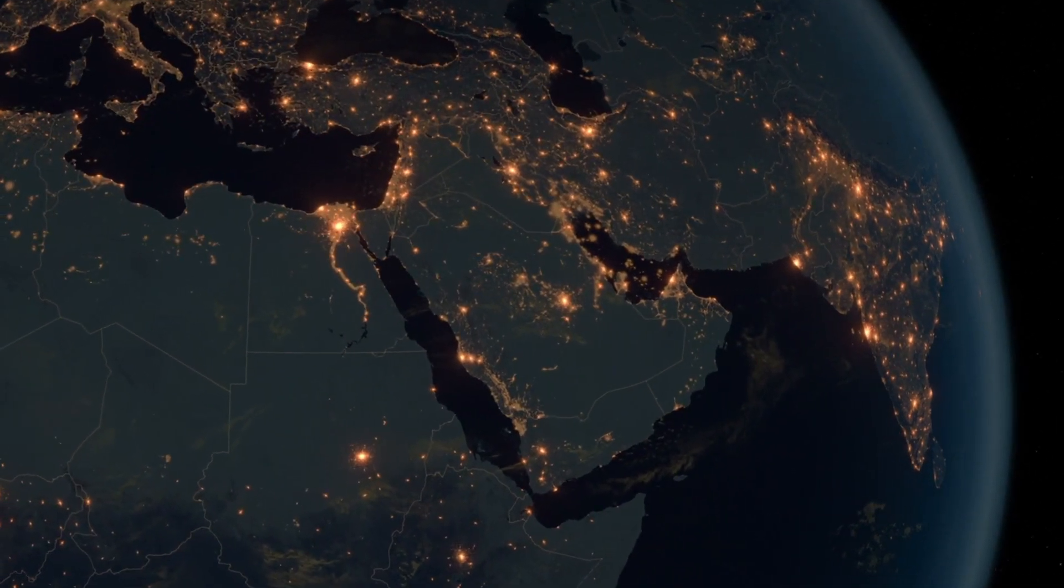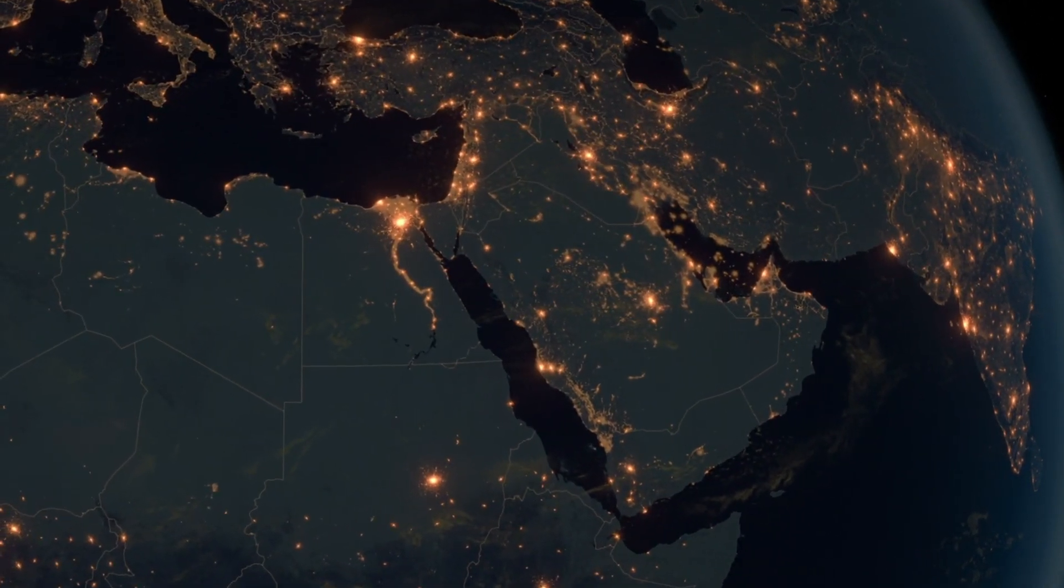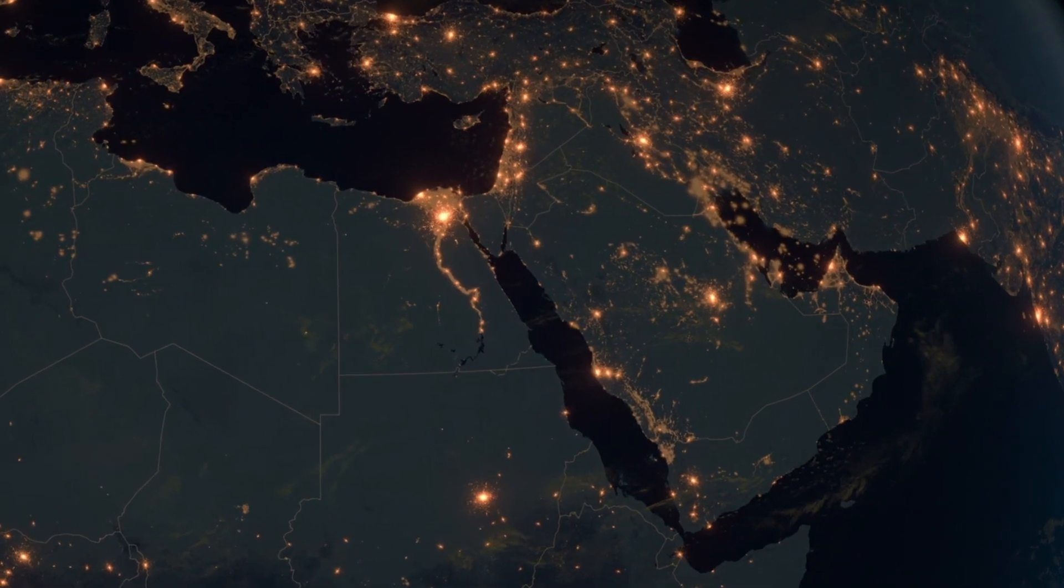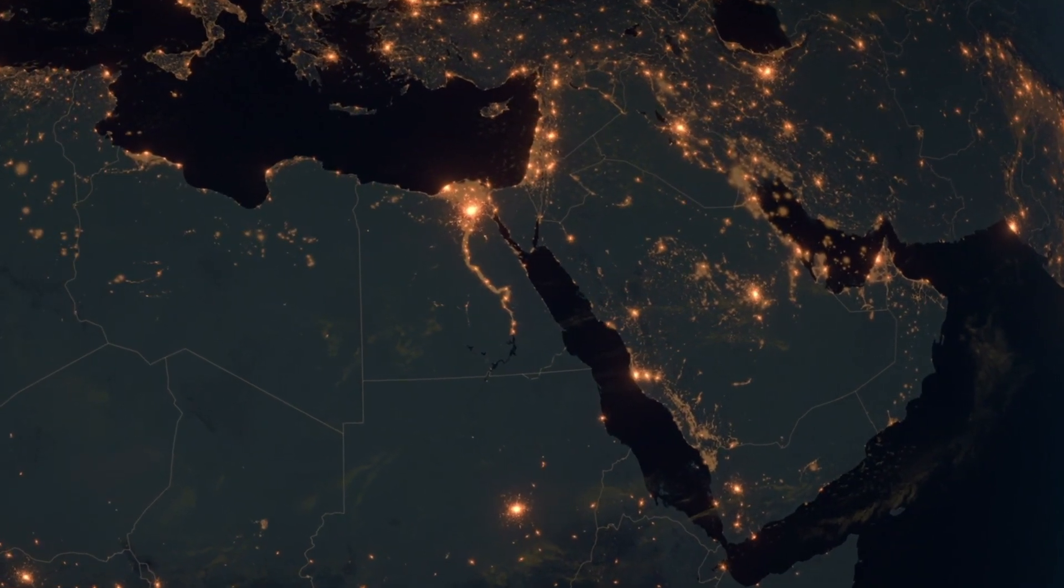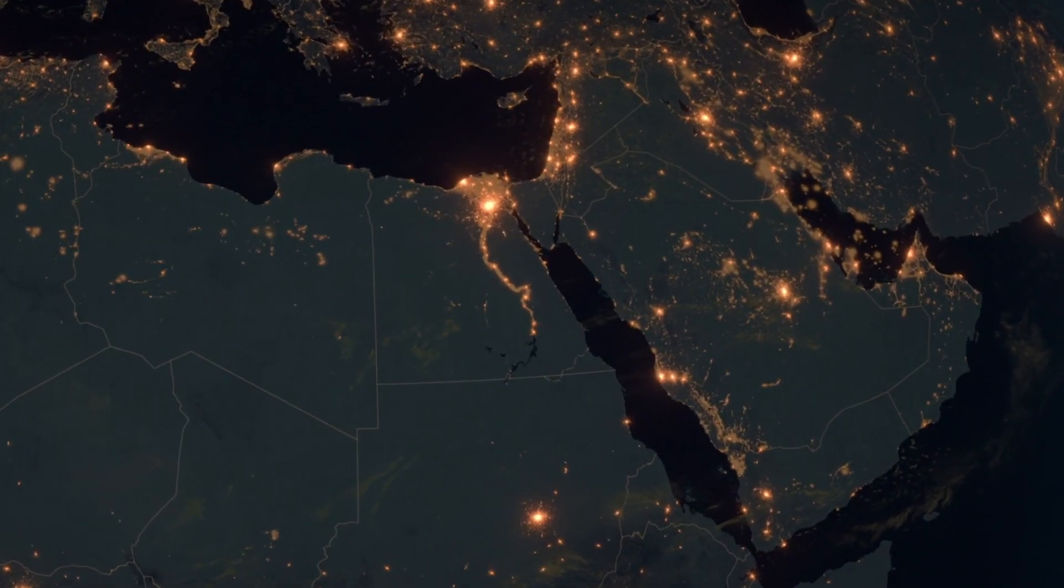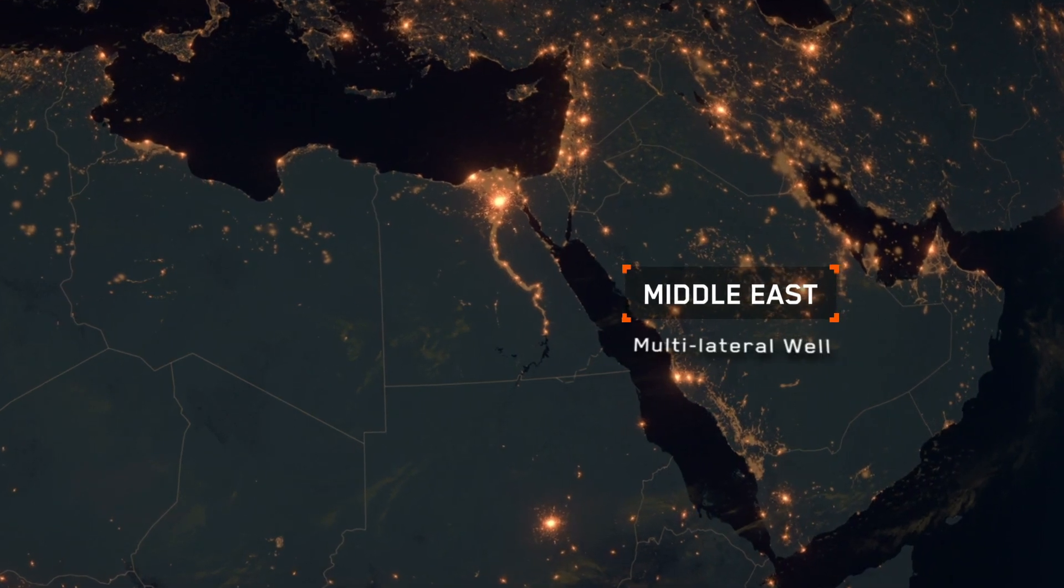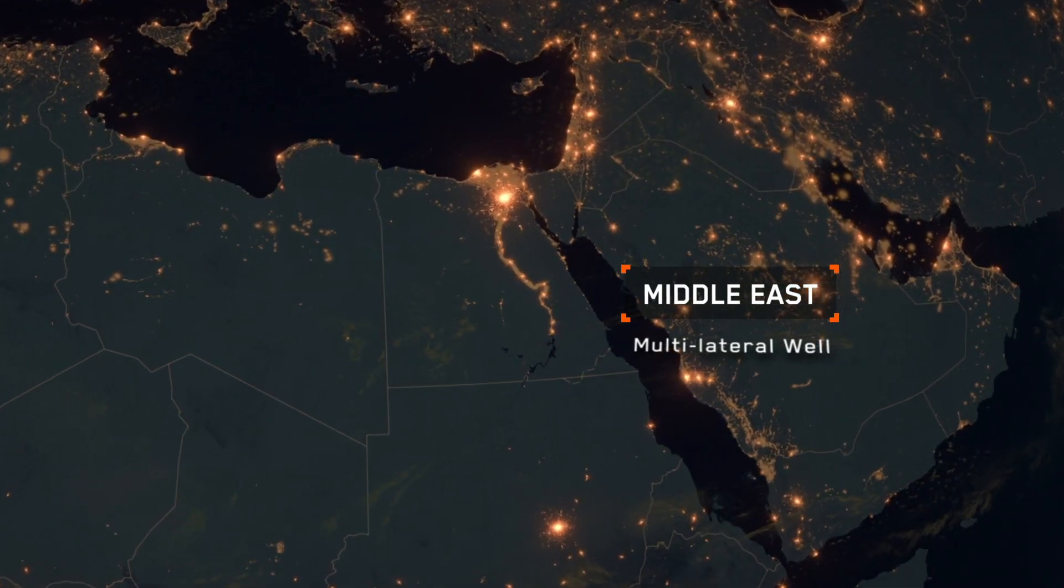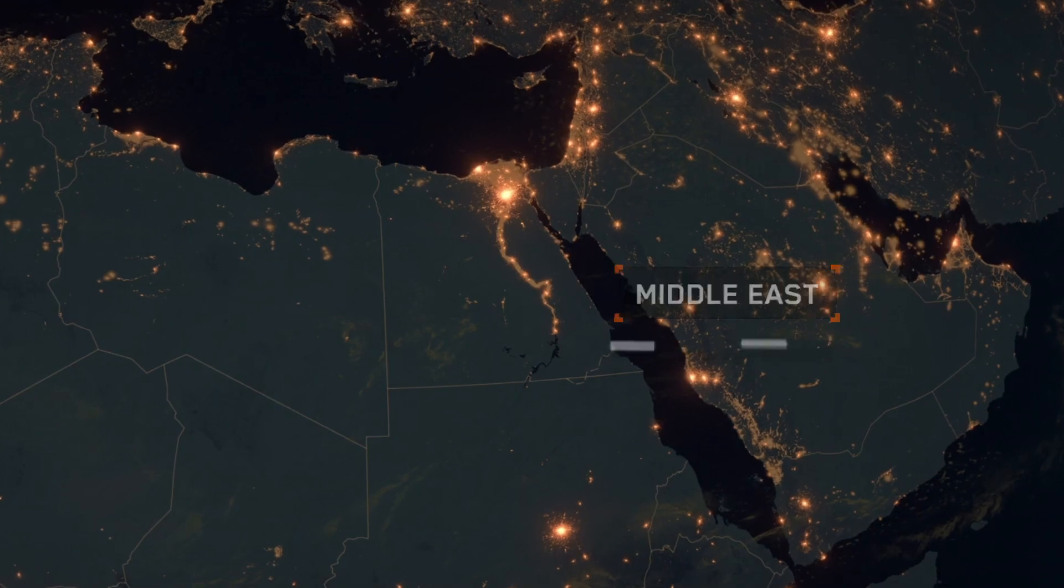This video of the month showcases how the application of Restriction VA, supported by Optus Technology, helped a leading operator in the Middle East understand a restriction in one of the laterals, preventing them from completing an acid stimulation on their oil-producing multilateral well.